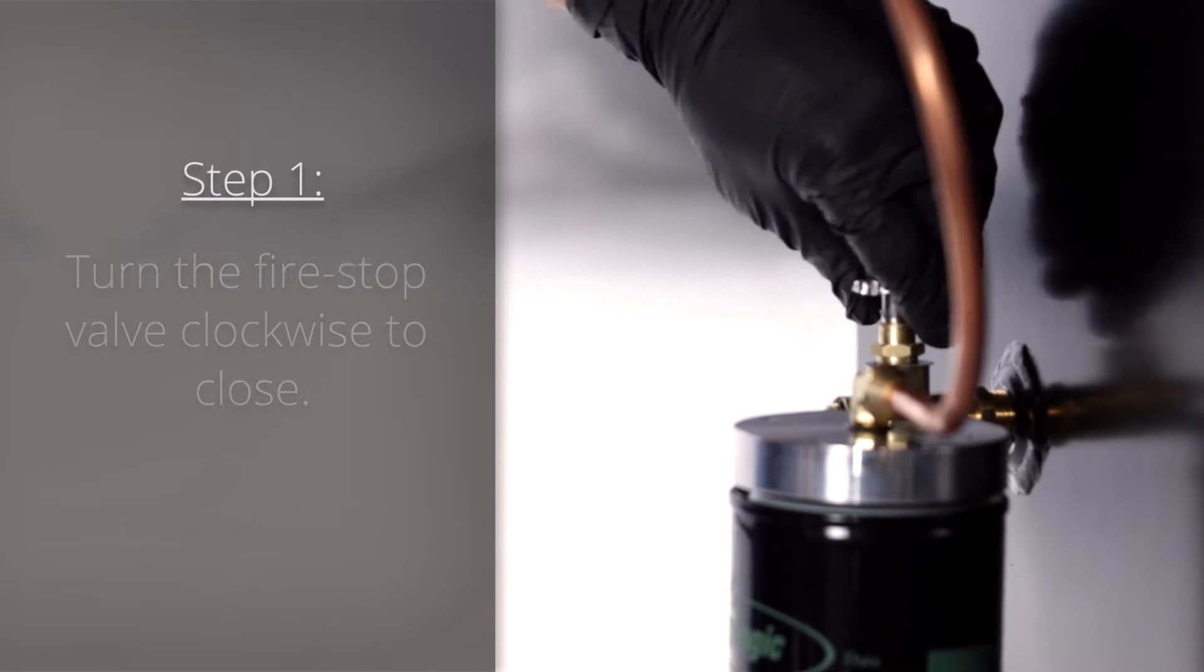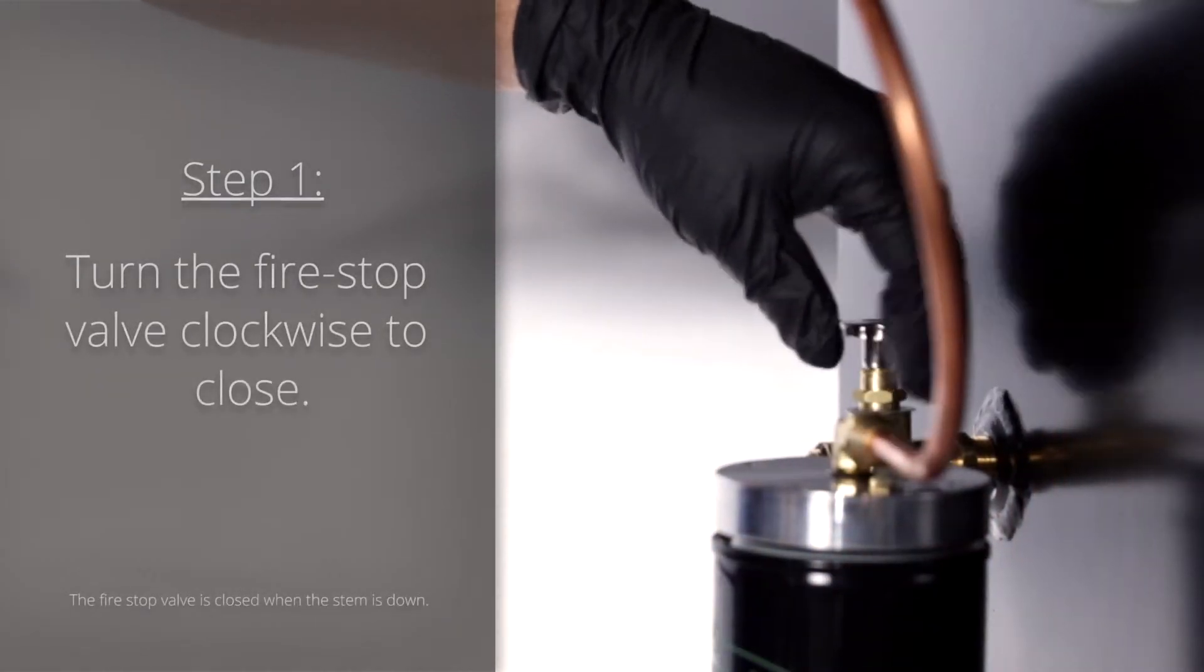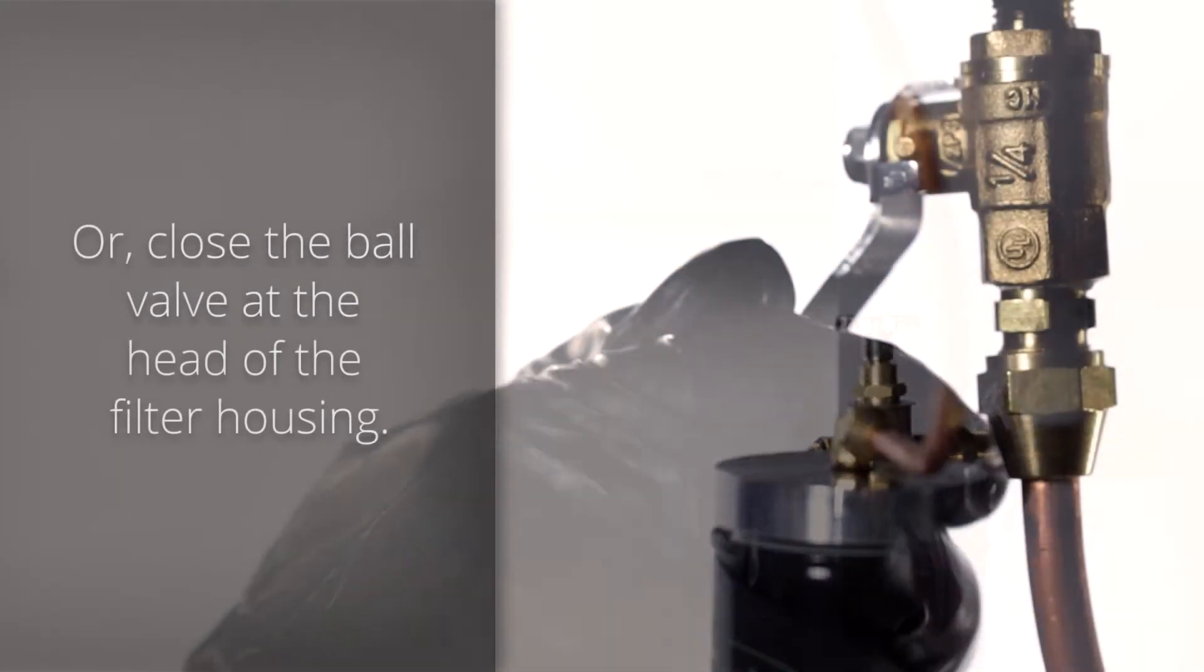Step 1: Turn the fire stop valve clockwise to close or close the ball valve at the head of the filter housing.